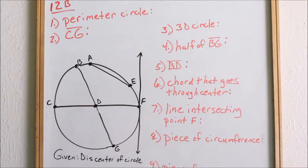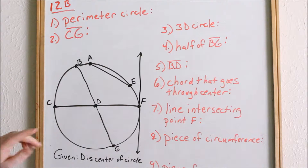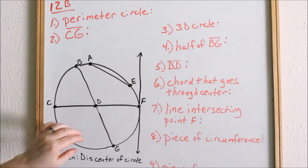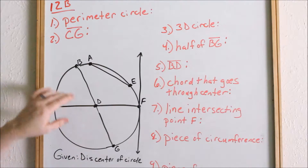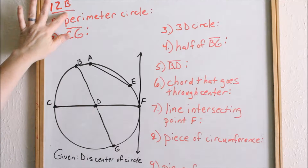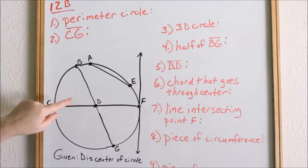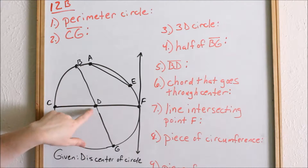We're going to be talking about different parts of a circle, or things that we might see in a circle. We have this given picture where I am on 12B, and given D is the center of the circle.